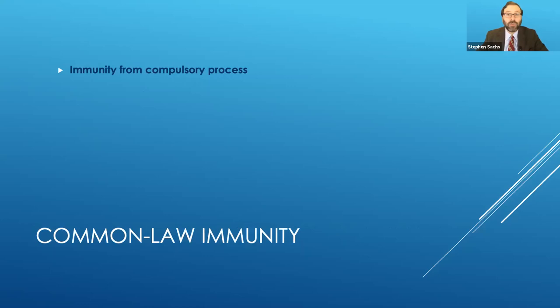First of all, the common law immunity. This was an immunity from compulsory process. So you could not hail a state into court and force them to show up. And it was derived from general and international law. If you look at some of the old sources like Nathan versus Virginia, they talk about this as one of the rules of the common law regarding sovereigns. You cannot hail another sovereign into court.